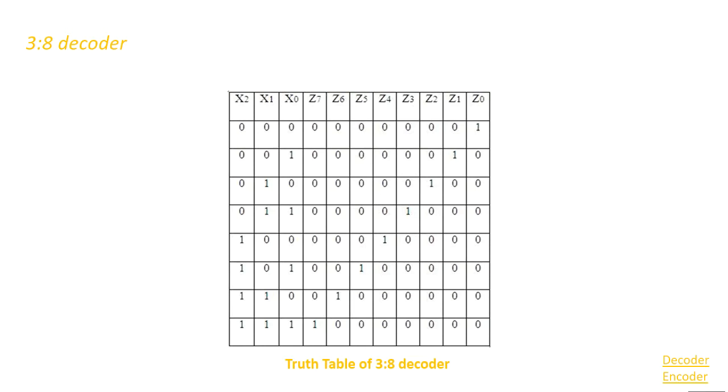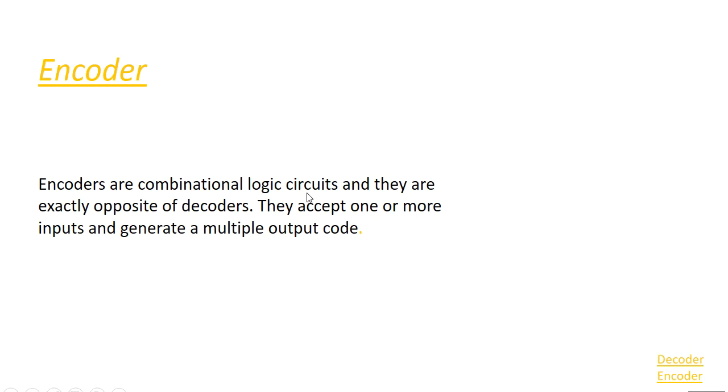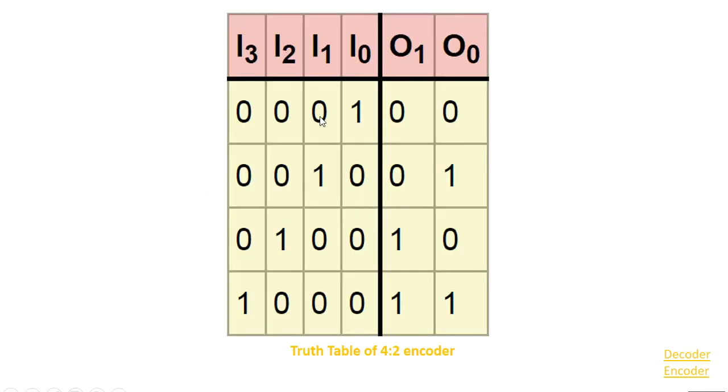Now I have to talk about encoder. Encoders are combinational logic circuits and they are exactly opposite of decoders. They accept one or more inputs and generate a multiple output code. This is the truth table of 4-to-2 encoder.